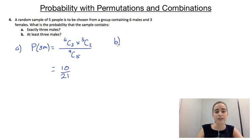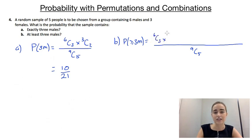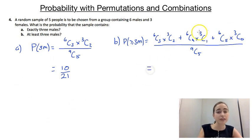Part B is slightly more complicated — it asks for at least three males, so the probability of three or more males. The denominator is still 9C5. In the numerator we add together the cases: exactly three males gives 6C3 times 3C2; exactly four males gives 6C4 times 3C1; and all five being males gives 6C5 times 3C0. You don't strictly need that last term but it's nice to see the pattern. Putting all of that in the calculator gives 37 over 42.